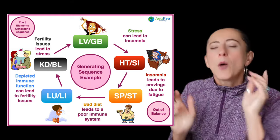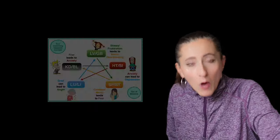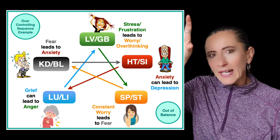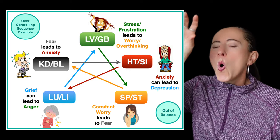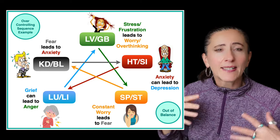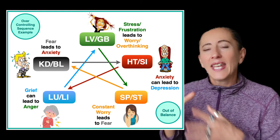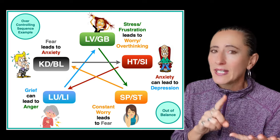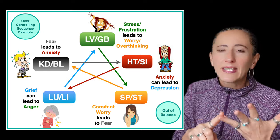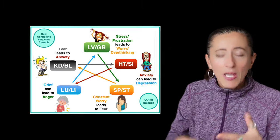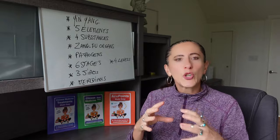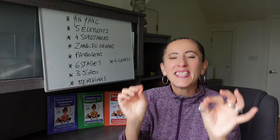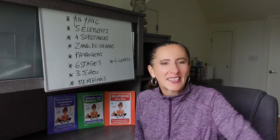So we have two things to treat: the immune system and the digestive system. But why is this person not eating properly? Maybe it's because they're really stressed. Stress affects the liver and gallbladder — the wood element. In five element theory, wood over-controls spleen and stomach, creating issues with earth. And in turn, spleen and stomach cannot generate a good immune system. So we have to treat the liver and gallbladder, the digestive system, and the immune system. The five elements always tell you where it all started.